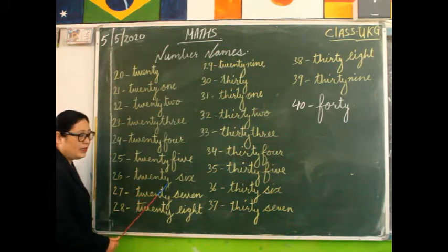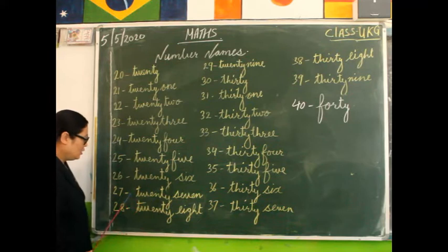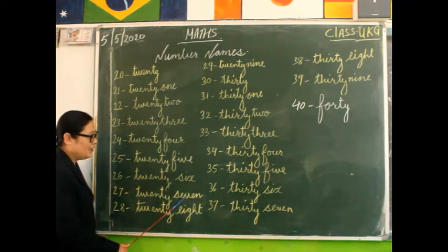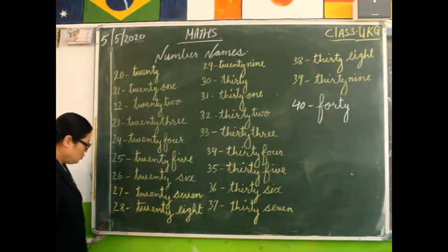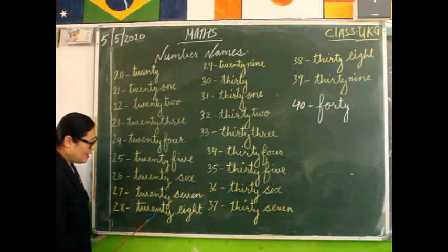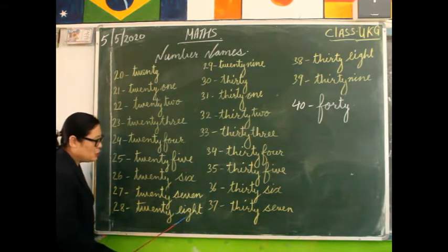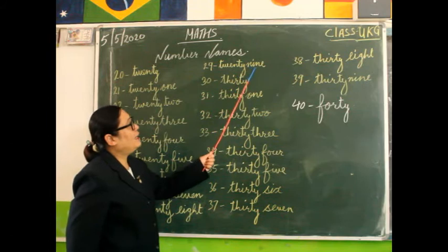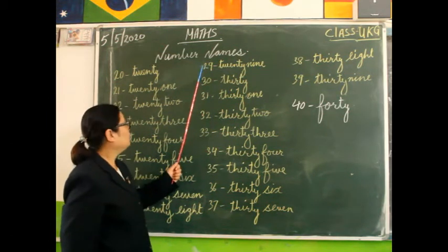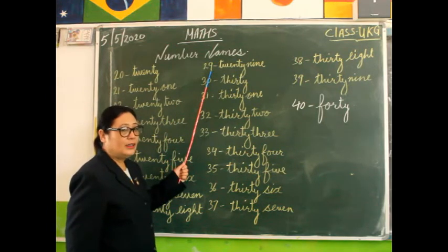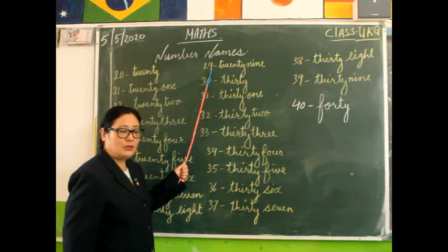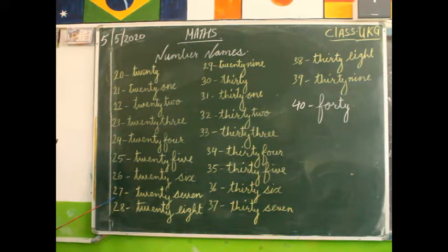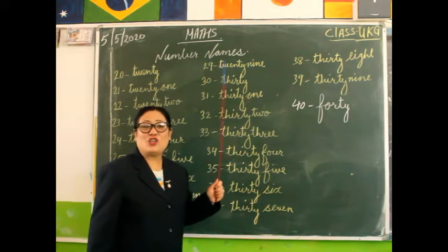26, 26, T-W-E-N-T-Y, 20, S-I-X, 6, 26. 27, 27, T-W-E-N-T-Y, 20, S-E-V-E-N, 7, 27. 28, 28, T-W-E-N-T-Y, 20, E-I-G-H-T, 8, 28. Then T-W-E-N-T-Y, 20, N-I-N-E, 9, 29.